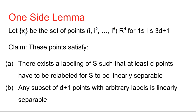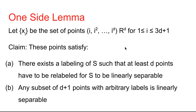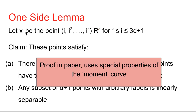These points x_i satisfy two conditions. First, there exists a labeling of these points such that at least d points would need to be relabeled for them to be linearly separable. Second, any subset of 3d+1 of these points can be arbitrarily labeled ±1 and they will be linearly separable. The proof of this claim uses special properties of what's known as the moment curve.